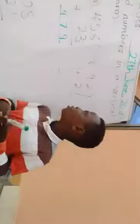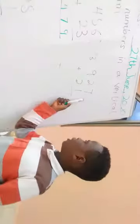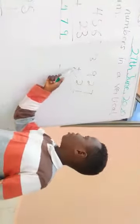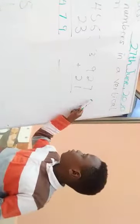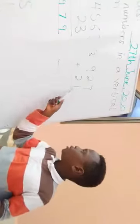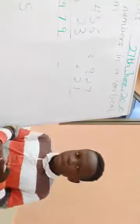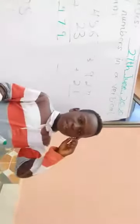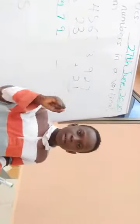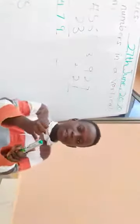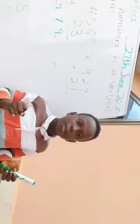Let's go to example 3: 927 plus 21. So 7 plus 1 — which number is bigger? 7. So 7 is in our mind. 8. And 1 — 1 is here. So 8. How many? 8.